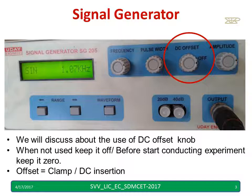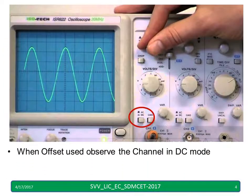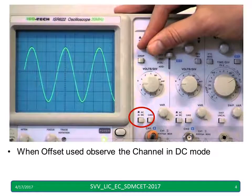Offset is nothing but a clamping or a DC insertion. Whenever you want to use Offset, you have to keep the CRO in the DC mode, so that you can observe the clamping.